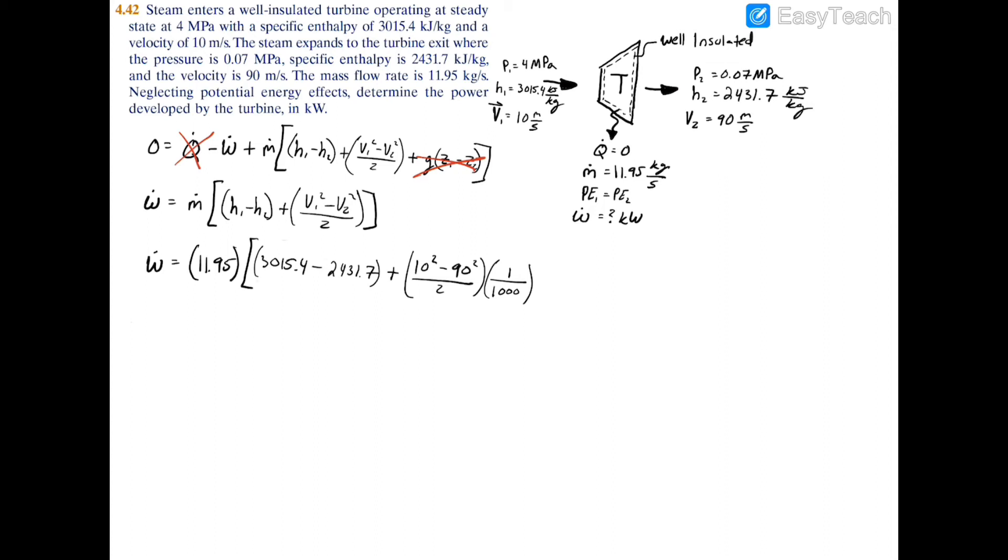If we wanted it to be in watts, we would have to add a given conversion factor to the specific enthalpy instead. So now we can close off our bracket and multiply across. And when you do, you'll have 6927.4.